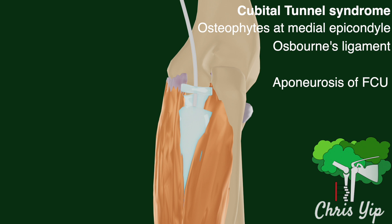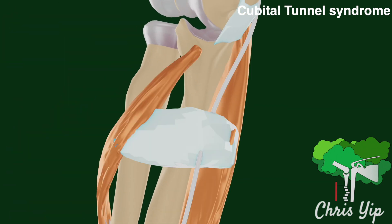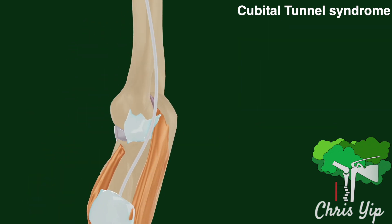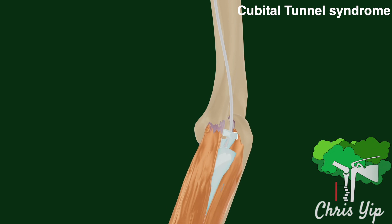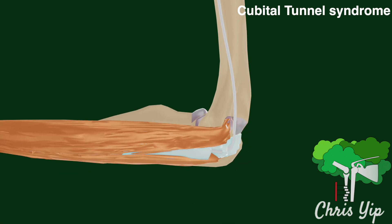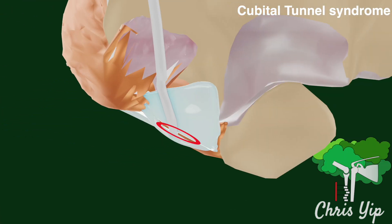After entering the anterior compartment of the forearm, the nerve can be trapped by the pronator aponeurosis, which originates from the pronator teres to the flexor carpi ulnaris. Symptoms related to the entrapment can be exacerbated by flexion of the arm, due to the tensioning of the nerve as well as the narrowing of the cubital tunnel.